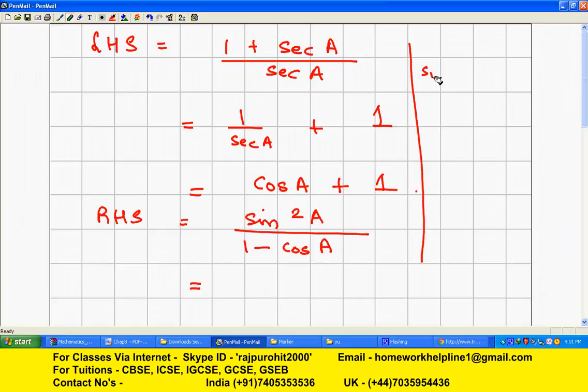Now you see sin²A + cos²A = 1, so sin²A will become: I will take this cos²A on the other side, it will become 1 - cos²A. So instead of sin²A, I will be writing 1 - cos²A divided by 1 - cos A.